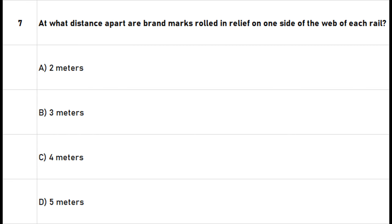Question 7: At what distance apart are brand marks rolled in relief on one side of the web of each rail? A. 2 meters. B. 3 meters. C. 4 meters. D. 5 meters. The right answer is option C: 4 meters.